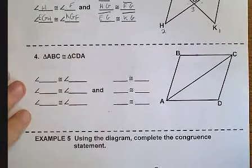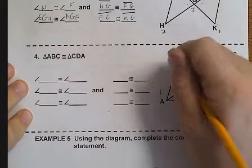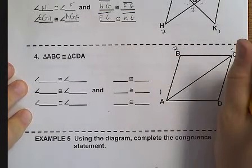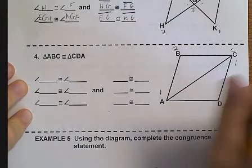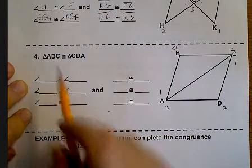So, if we're talking number four, we have ABC the same as CDA.